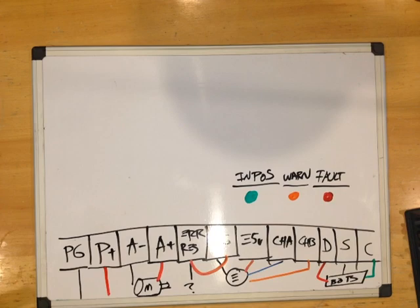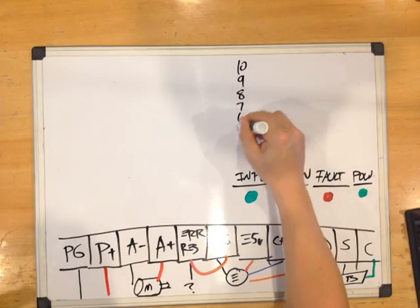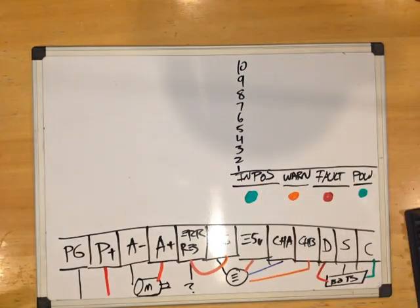Finally we have the power LED. It's green and just lets you know if there's power. Now let's talk about the 10 dip switches. If you have any of the switches switched over to the left that turns them on. Switched over to the right turns them off.